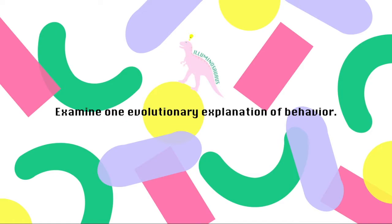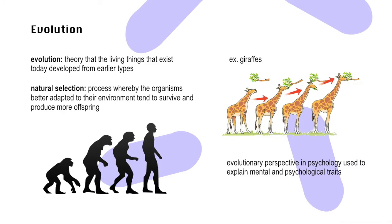The behavior we will be discussing in today's video is disgust. Before we talk specifically about disgust, let's talk more about evolution. Evolution is the theory that the living things that exist today developed from earlier types. The characteristics of our ancestors and the characteristics of us now are different, and this can be explained through natural selection. Natural selection is the process whereby the organisms better adapted to their environment tend to survive and produce more offspring. As time passes, the more favorable traits will be passed down from generation to generation, which explains the change in heritable characteristics over time.